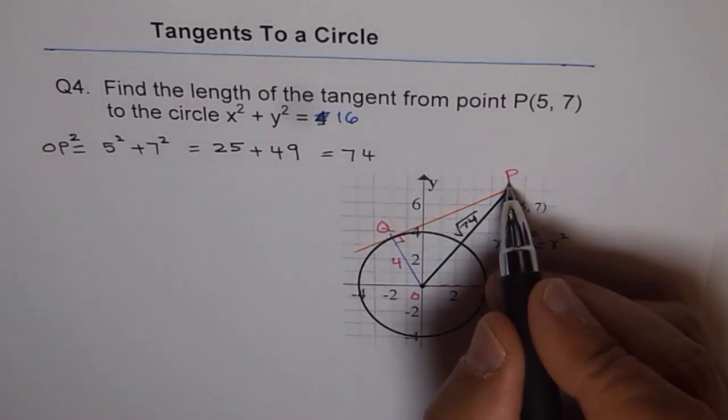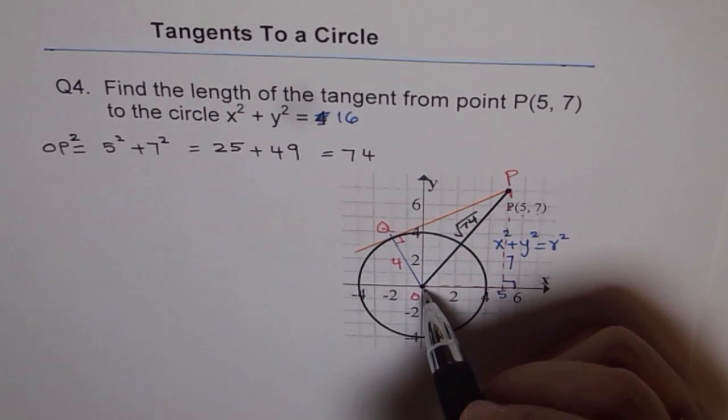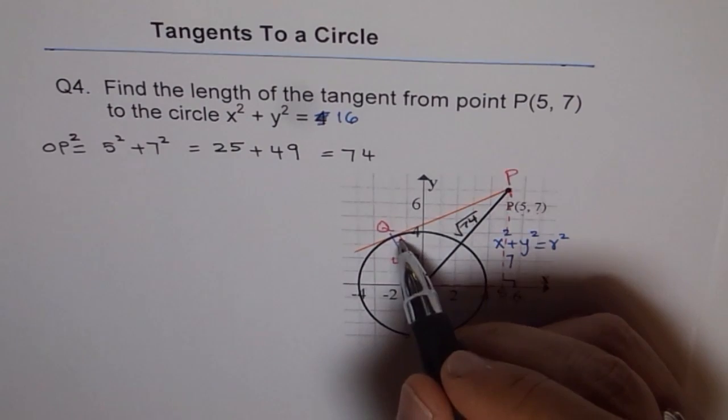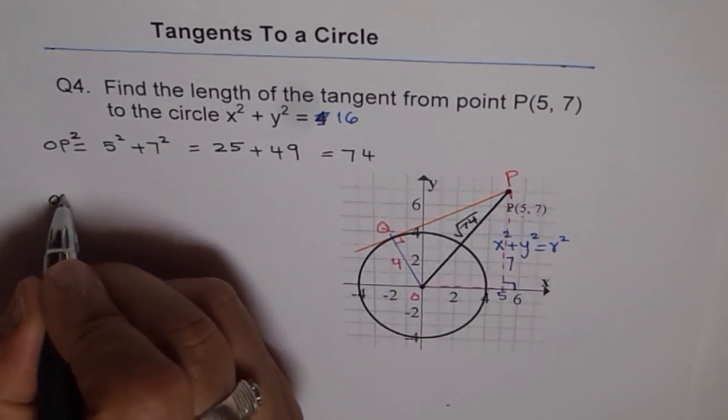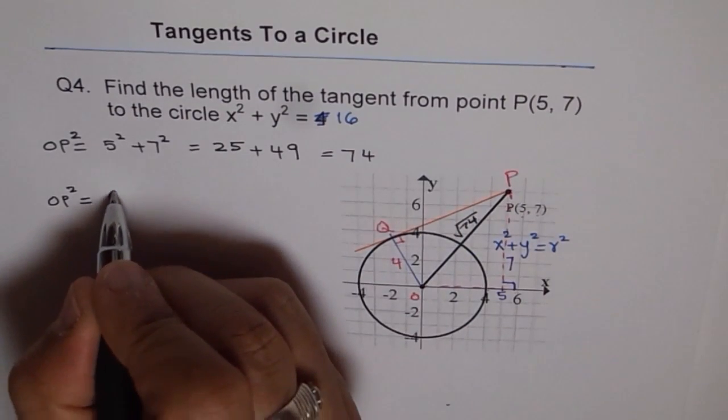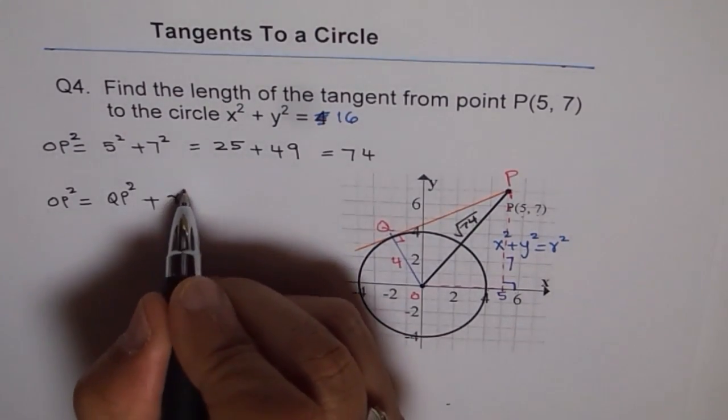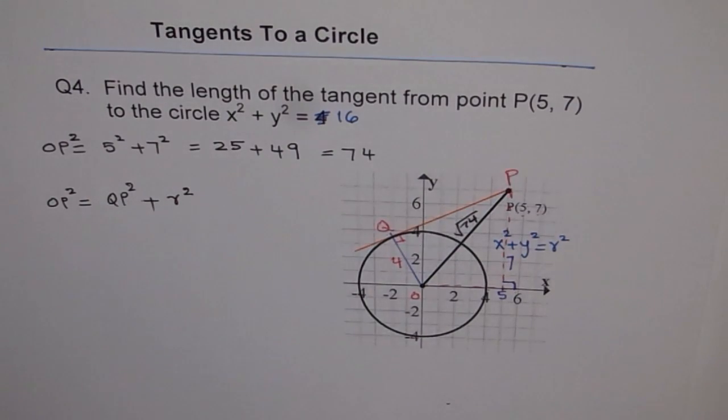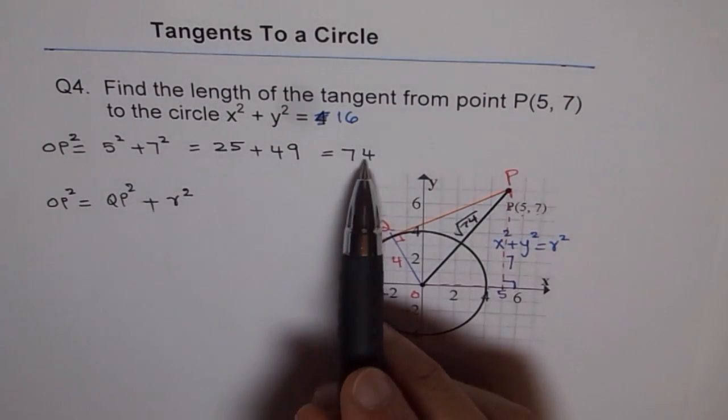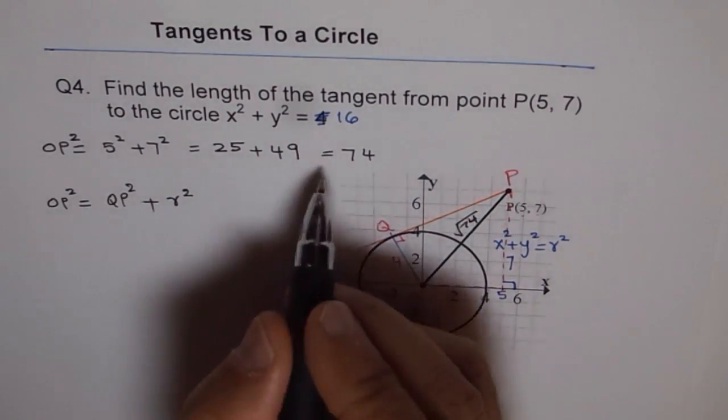Now we need to find QP. Now we will consider this right triangle which the tangent makes with the radius. Here, that becomes the hypotenuse opposite to 90 degrees. So again, OP² equals QP² plus r². Now OP² is 74, so now you see why I didn't square root it. No need, because I wanted square only. So 74 equals QP² plus r², which is 4², and 4² is 16.